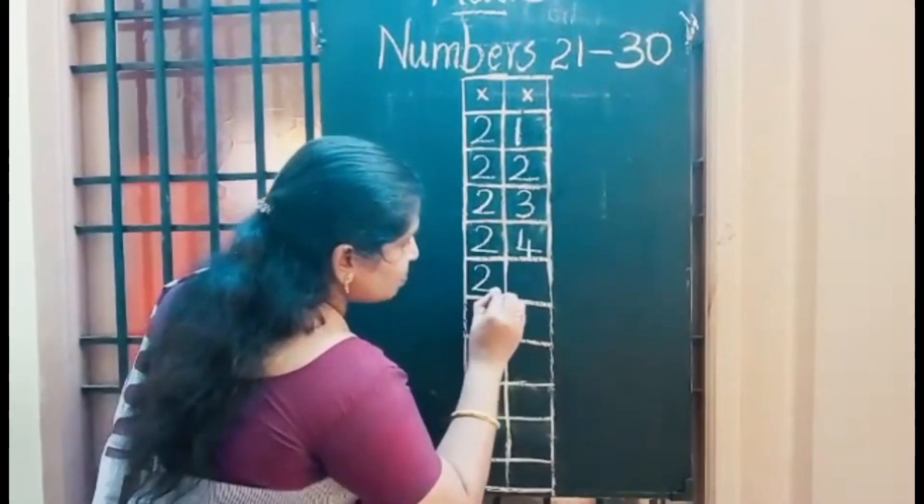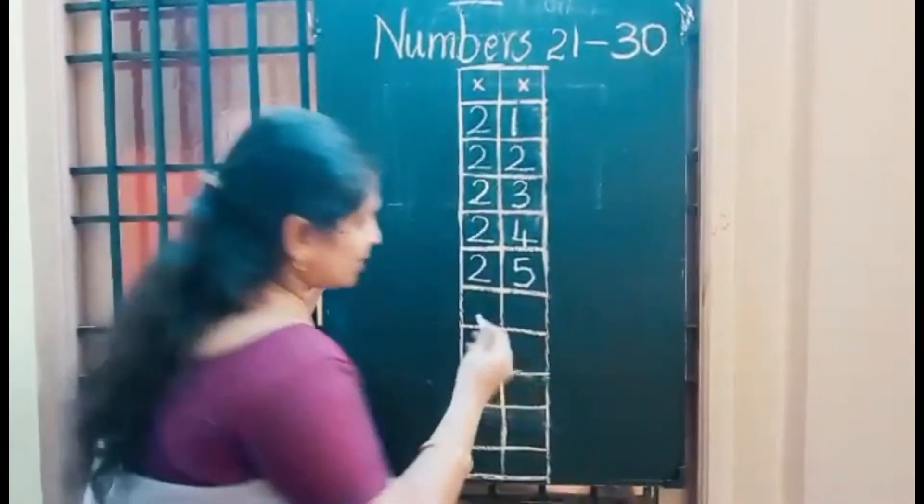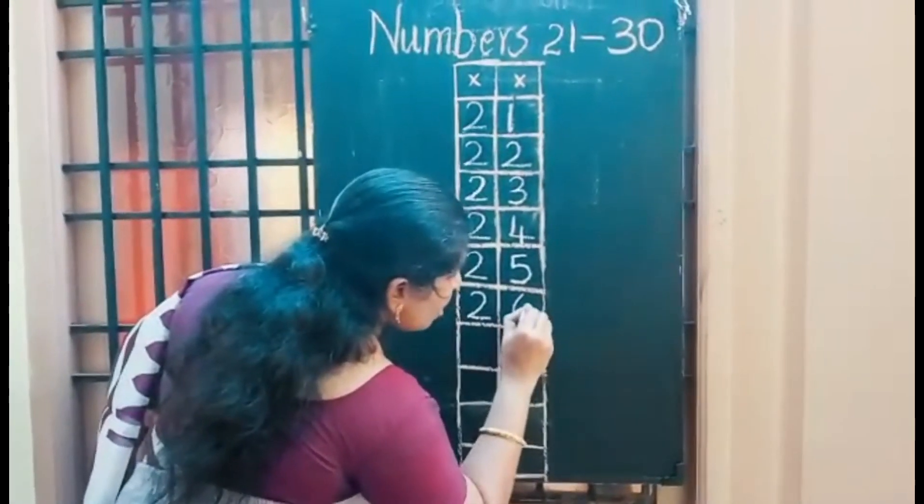2 5, 25. 2 in the 10th place, 5 in the 1's place. 2 6, 26. 2 in the 10th place, 6 in the 1's place.